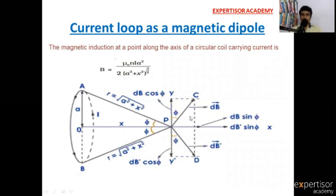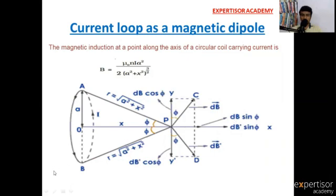With respect to point b, we have dB cos phi and dB sin phi — the horizontal and vertical parts of the magnetic field. With respect to point a, we have dB' cos phi and dB' sin phi. The sine values always pass through the x-axis, and the cosine values always pass through the y-axis.